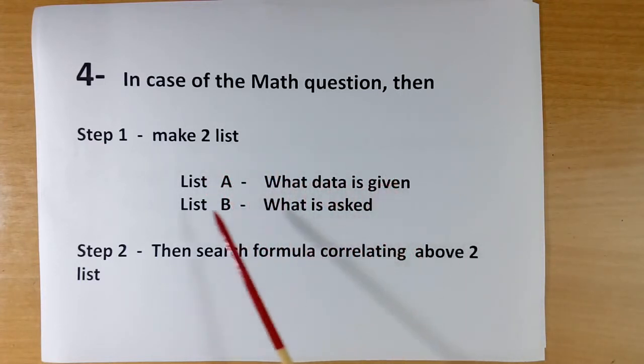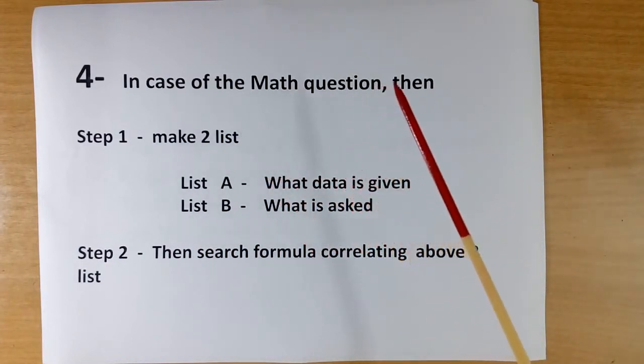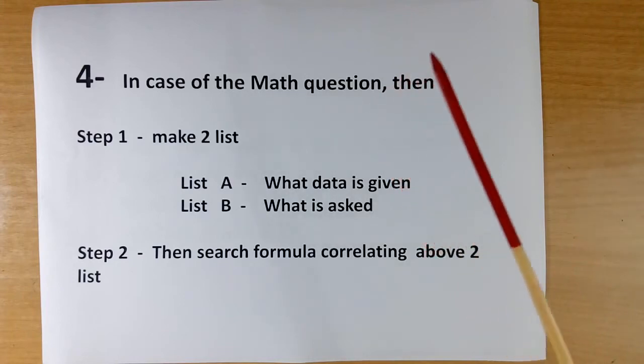List A, what data is given. List B, what is asked. After making these two lists, then search formula correlating above two lists. You will realize that math question looks very easy. You can solve the problem.